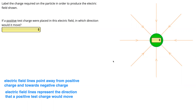Let's think about that with this question here. We've got all these field lines pointing in towards this particle, and we're trying to figure out what is the charge on the particle. Since the field lines are pointing towards the center, and we know that field lines always point towards negative charge, that means this particle must be negatively charged.